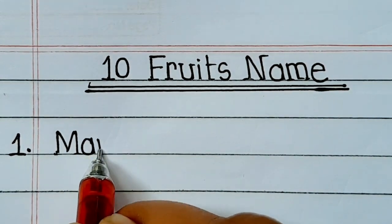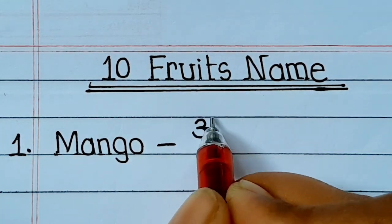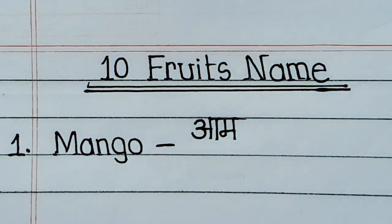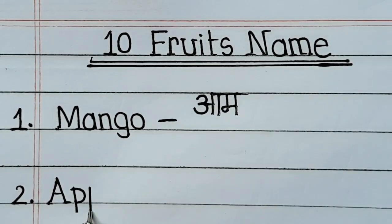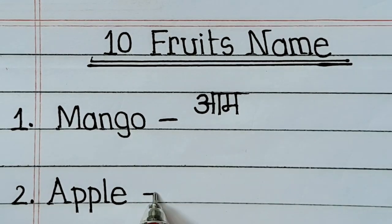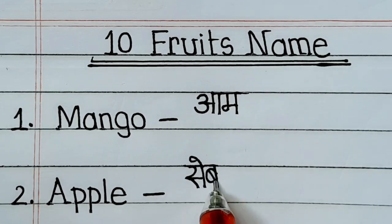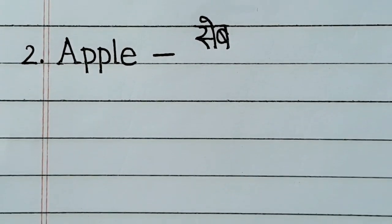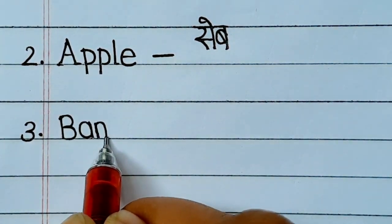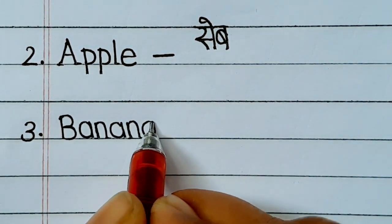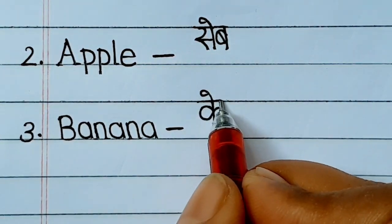M-A-N-G-O, mango means aam. A-P-P-L-E, apple means seb. B-A-N-A-N-A, banana means kela.